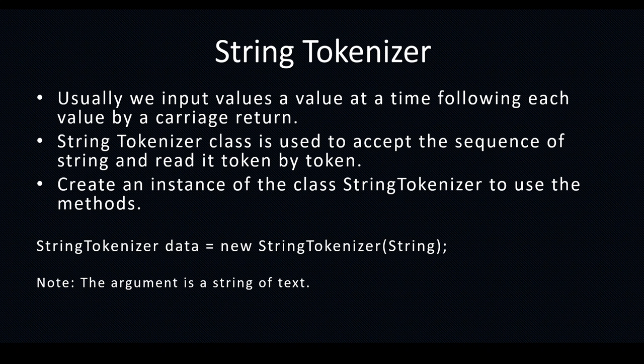So here the string tokenizer comes in. The string tokenizer class is used to accept a sequence of strings and read it token by token. So here you can use the string tokenizer to accept the whole sentence word by word, or accept a whole set of numbers number by number, and then do the manipulation. You should create an instance of the class string tokenizer to use its methods.